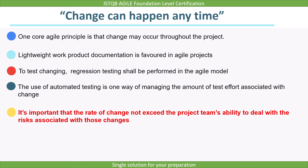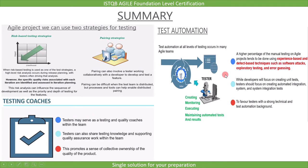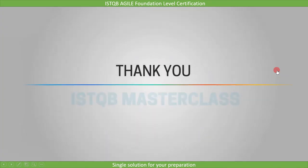The important point here is that testers shall be ready for changes, and an automated regression testing approach should be used to test changes. To summarize this lecture: first, risk-based testing strategies or pairing strategies are used in the Agile model. Second, testers may serve as testing and quality coaches within the team. Third, test automation with regression testing should be used. For manual testing, experience-based and defect-based techniques such as software attacks, exploratory testing, and error guessing are preferred.